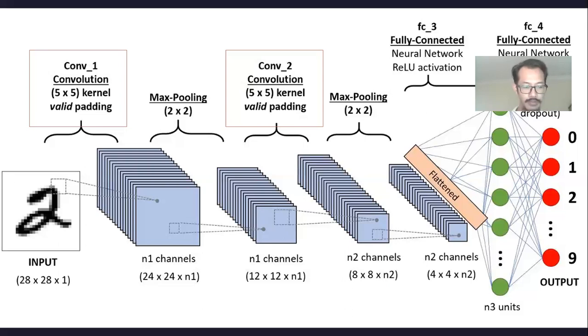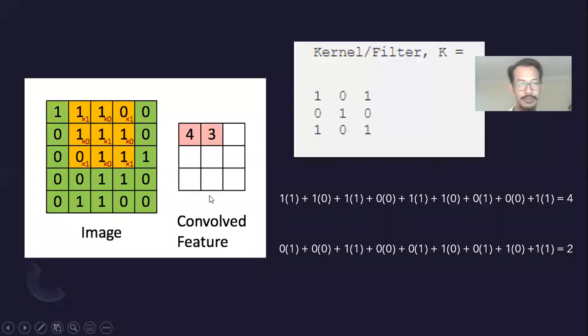How convolutional layers work is you have this kernel that is slid across the image and for each slide it produces this convolved image. This operation is simply just the dot product and you can verify it within the kernel.